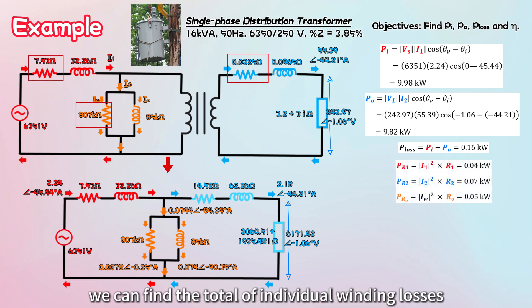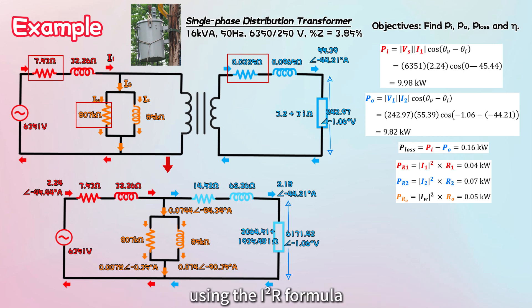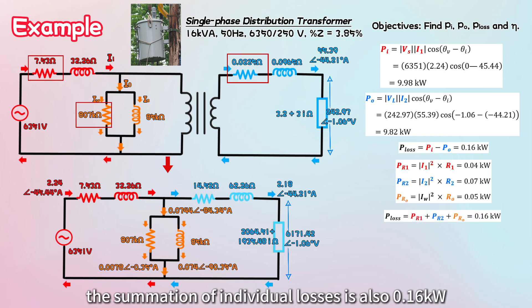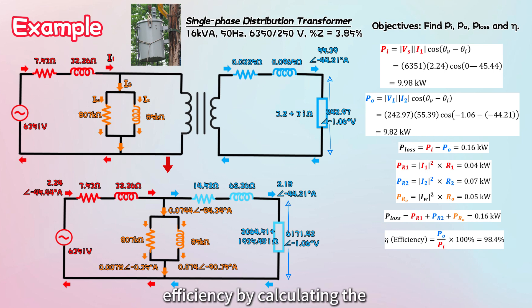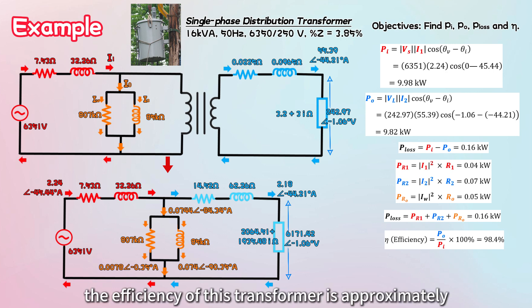To validate this loss value, we can find the total of individual winding losses and core losses using the I²R formula, ensuring it matches our calculated power loss. In this case, the summation of individual losses is also 0.16 kilowatts, confirming our calculations. Finally, we can calculate the efficiency by calculating the ratio of output power to input power. With these values, the efficiency of this transformer is approximately 98.4%.